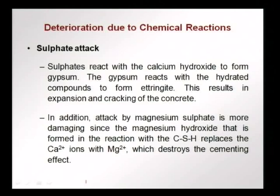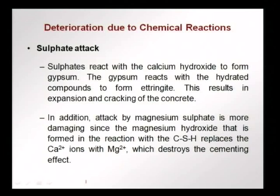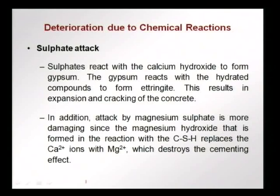If we have magnesium sulphate attacking the concrete, it is even worse. The magnesium hydroxide formed replaces the calcium ions in the calcium silicate hydrate (CSH) gel with magnesium ions, causing the CSH to lose its cementing effect. The concrete not only cracks but starts disintegrating very fast. We can avoid this by using a very impermeable concrete, a cement with better resistance to sulphate attack, and ensuring good quality concrete.